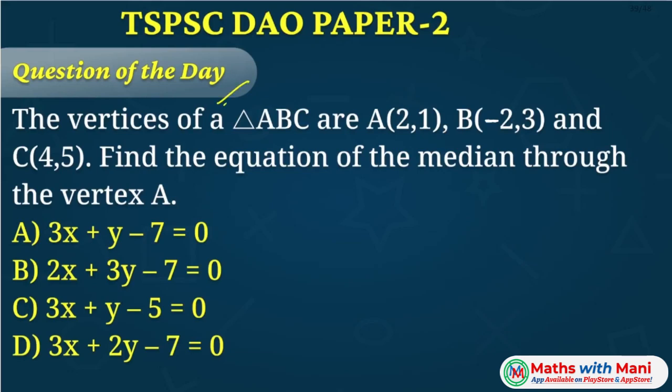Hi friends. Welcome to the question of the day series. Today's question is: the vertices of a triangle ABC are A(2,1), B(-2,3) and C(4,5). Find the equation of the median through the vertex A.